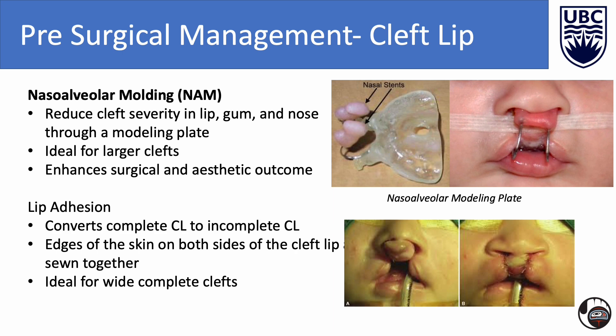The main goal of nasal alveolar molding is to reduce the size and severity of the cleft. It involves a molding plate, similar to a dental retainer, which is fitted into the child's mouth. This plate helps in guiding the growth of the baby's gums and shaping the nose. Treatment usually begins within the first few weeks of life and continues until the child is ready for cleft lip repair, typically around 3 to 6 months of age. The main objective of lip adhesion is to convert a complete cleft lip into an incomplete one by helping straighten the gum line and reposition the nose. The edges of the skin on both sides of the cleft lip are sewn together. The procedure is performed at 1 to 2 months of age and is indicated in patients with wide, unilateral, complete cleft lips.